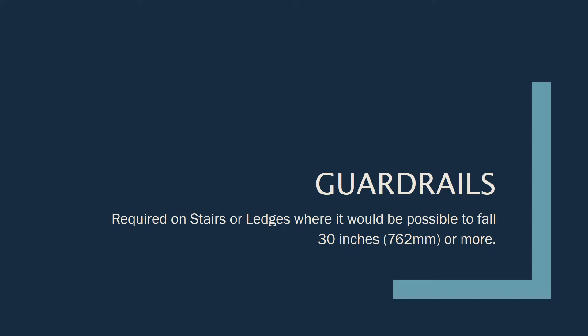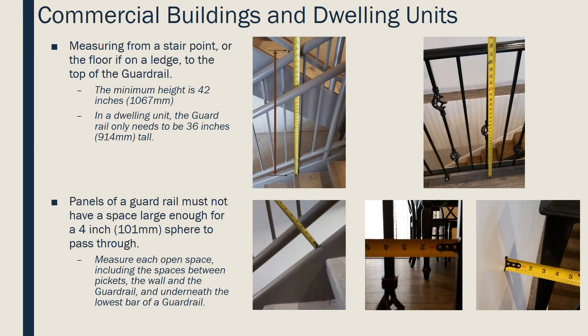Next, we will talk about guardrails, which are required on stairs or ledges where it would be possible to fall from 30 inches or more. In both commercial buildings and dwelling units, measuring from a stair point or the floor if on a ledge to the top of the guardrail, the minimum height is 42 inches. However, in a dwelling unit, the guardrail only needs to be 36 inches tall. The two pictures on the top show the heights of the guardrails being measured — the left is on a stair, while the right is on a ledge.